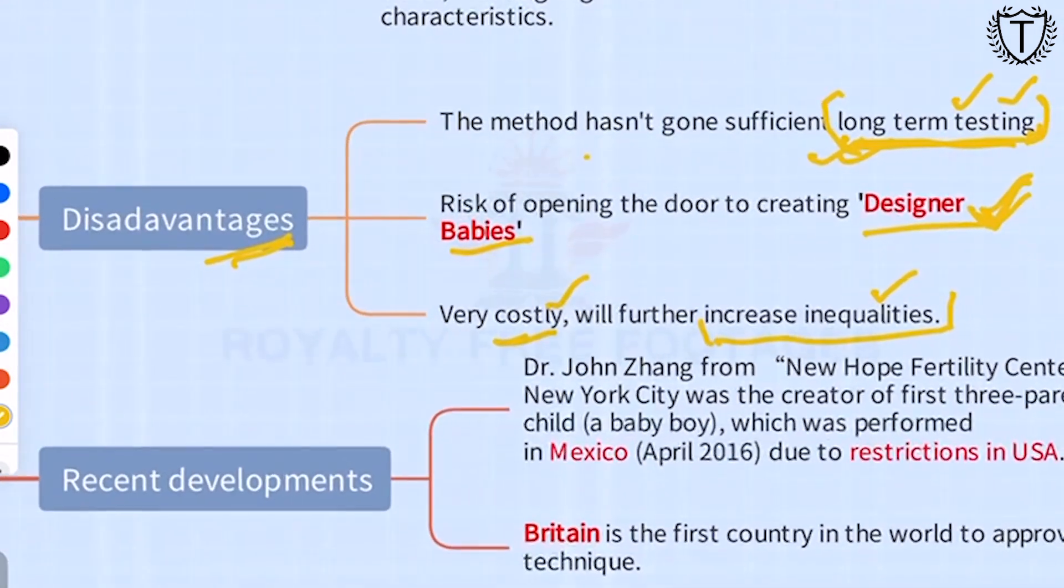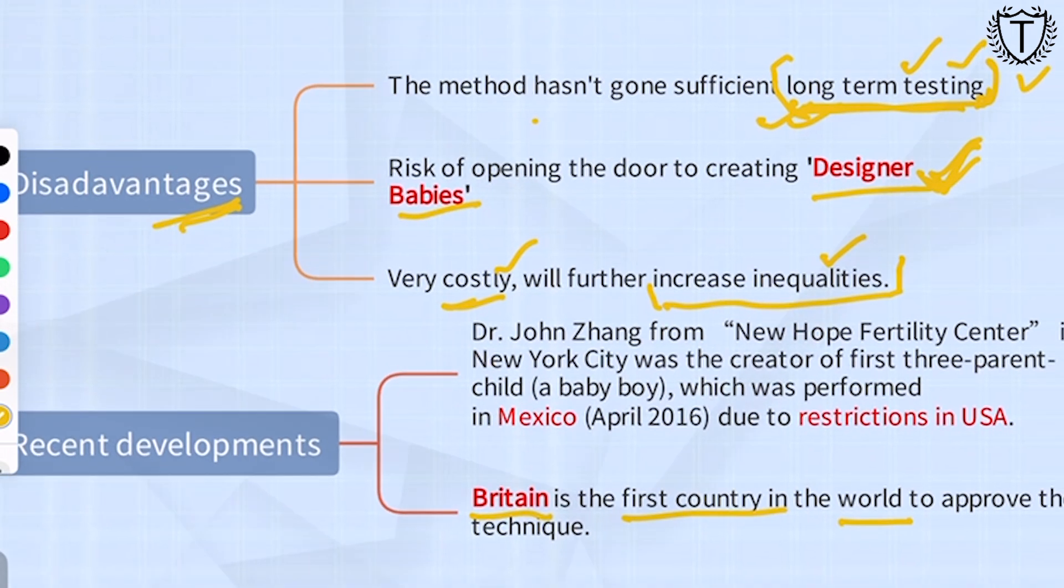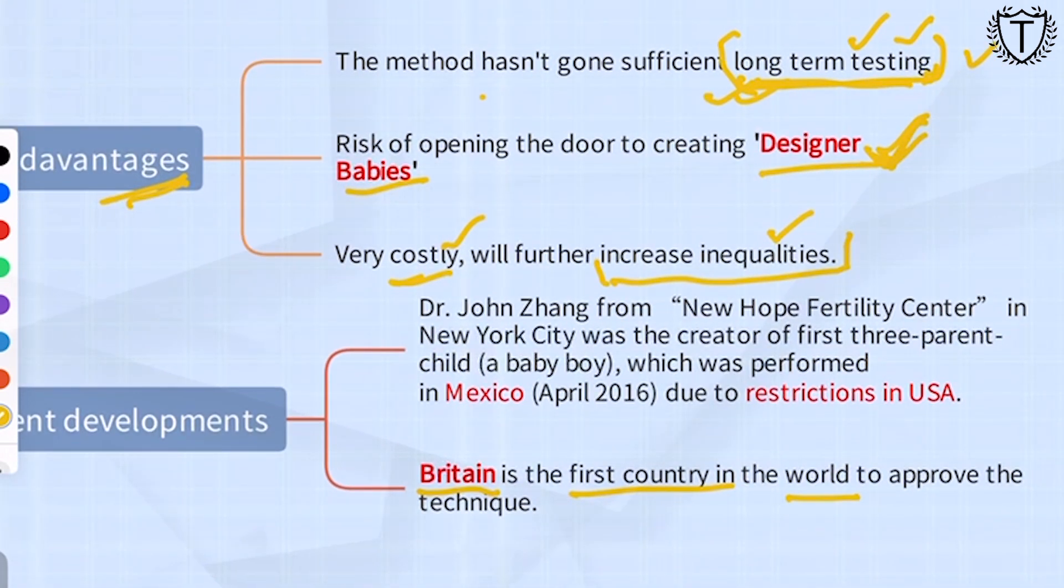The recent development is that Britain becomes the first country in the world to approve of this technique. This technique is restricted in the USA, but the first three-parent child was born in Mexico by Dr. John Zhang from the New Hope Fertility Clinic.